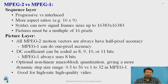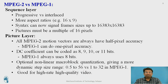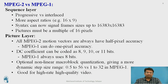The key differences between MPEG-2 and MPEG-1 include: the sequence layer supports interlaced scanning and a 16:9 aspect ratio, and the syntax can support a single frame size up to approximately 16,000×16,000. The picture must be a multiple of 16 pixels. All MPEG-2 motion vectors are always half-pixel accurate, whereas MPEG-1 provides only 1-pixel accuracy.